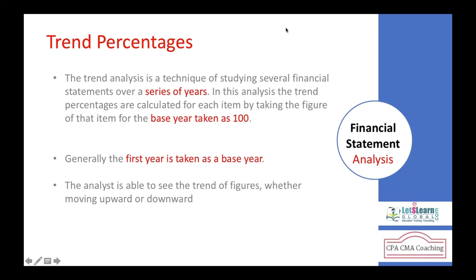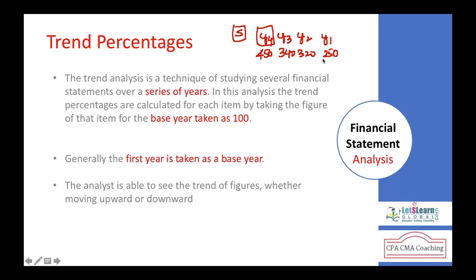For example, we have sales in year one of $250,000; year two $320,000; year three $340,000; year four $450,000. Now we are in year four, the current year, and we want to see what is the trend in sales over a period of four years — a series of years.